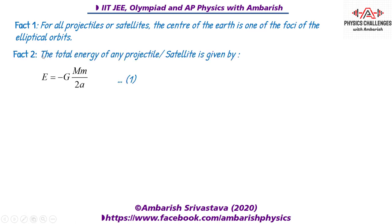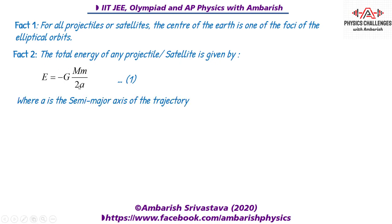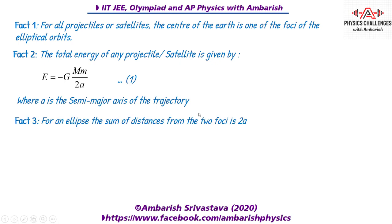Fact two: the total energy of any projectile or satellite is given by E = −GMm / 2a, where a is the semi-major axis of the trajectory. This is presented in almost all standard IIT-JEE textbooks. Fact three: for an ellipse, the sum of distances from any point on the ellipse to the two foci equals 2a. This is a standard result from coordinate geometry.